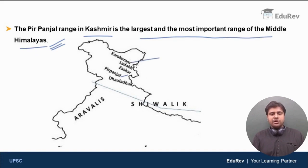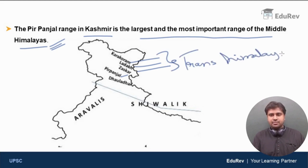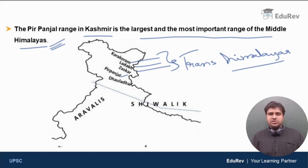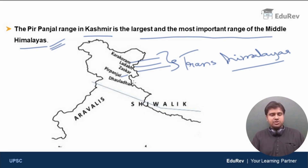Just forget about Karakoram, Ladakh, and Zaskar, because these three ranges belong to trans Himalayas. We are currently discussing the division of Himalayan ranges: first the Shivaliks, now the middle Himalayas, then the great Himalayas, and then trans Himalayas. So the Pir Panjal and Dhauladhar ranges are the ranges of the middle Himalayas.